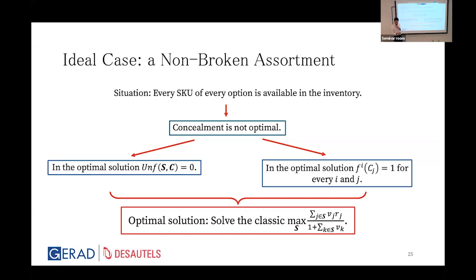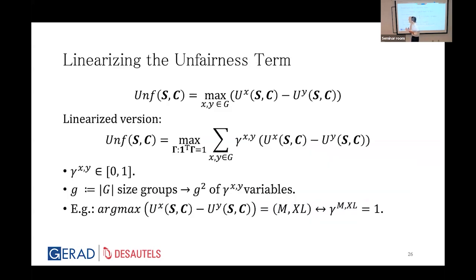We make two adjustments to the objective function. First, working with a max over two size groups inside the objective is complex, so we replace it with a linearized version introducing gamma(x,y) variables to capture the importance of the gap between unavailability for groups x and y. If there are G size groups, we have G² such gamma(x,y) variables. In the optimal assortment, the gamma for the pair with the largest gap equals one.